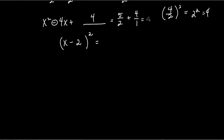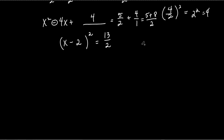Now we have to add those fractions on the right side — for some of you this is the hardest part. Find a common denominator: I have two and one, so the common denominator is two. Five over two stays as is. To convert one to two I multiply by two, so four becomes eight over two. Five plus eight is thirteen, so it's thirteen over two. That's what five halves plus four equals.